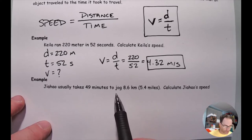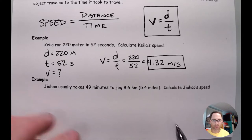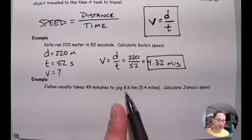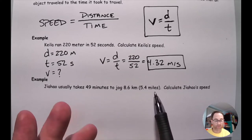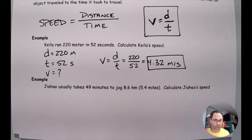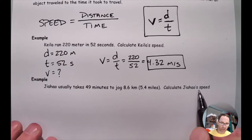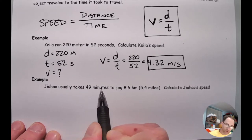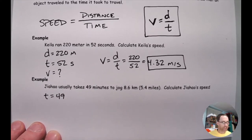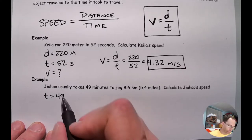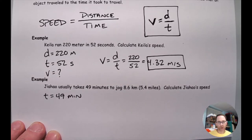Let's do one more. It takes 49 minutes to jog 8.6 kilometers, or 5.4 miles. An important note: numbers in parentheses give an alternate version — in the United States we use miles, but almost every other country uses kilometers. That's why numbers are often given in two measures; you choose whichever is appropriate for your situation. Our goal is to calculate speed, so I need to know distance and time. I can see that 49 minutes is the time because of its units. I'll write T equals 49 MIN.